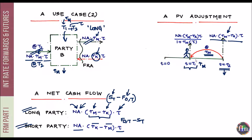An important point: RM and RK are quoted with a compounding frequency that matches the period T2 − T1. For example, in a 3-month × 6-month FRA, T2 − T1 is three months, so both rates use quarterly compounding. If rates are given on a continuous compounding basis, convert them to the appropriate compounding frequency before computing cash flows.